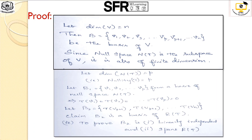It is given that the dimension of V is N, so we consider its basis B with N elements V1, V2, V3, ..., Vp, Vp+1, ..., Vn. Since the null space is a subspace of V, its dimension must be finite. Let the dimension of the null space N of T equal P, so nullity of T is P. The null space has a basis of dimension P, with basis V1 consisting of elements V1, V2, ..., Vp. All elements in the null space are mapped to 0 by T: T(V1) = T(V2) = ... = T(Vp) = 0.